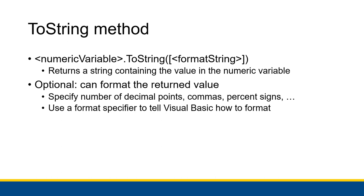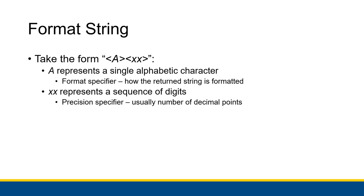There's an optional format string which allows you to specify things like number of decimal points, commas, percent signs, all kinds of stuff. You can use a format specifier to tell Visual Basic how to format everything. That format string takes the form of some letter and then a sequence of digits that represent the number of decimal points. The letter itself is the format specifier that determines how the returned string is formatted.